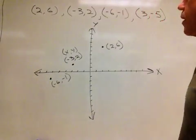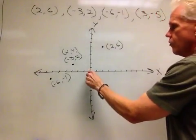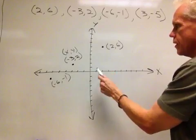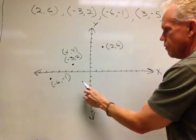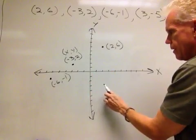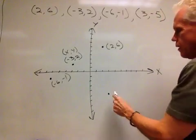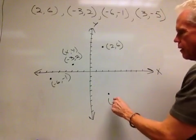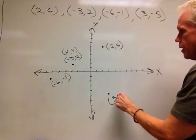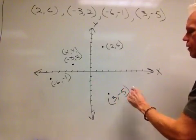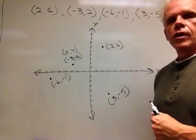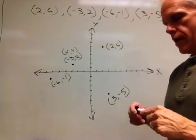And then finally, the last ordered pair was 3, comma negative 5. So on the x-axis, go out to the 3, and then come down 1, 2, 3, 4, 5, that lines up about right here. So our ordered pair there is positive 3, comma negative 5. I hope you were able to do all those well and work through that.